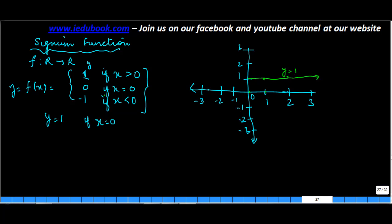Now y is equal to 0 if x is equal to 0. So this is another point that you have in a signum function. And y is equal to -1 if x is less than 0. Now x less than 0 is on this side. It is your negative x-axis.